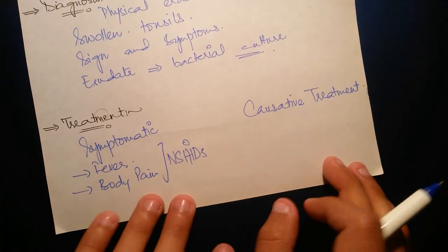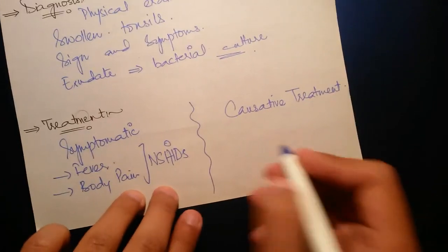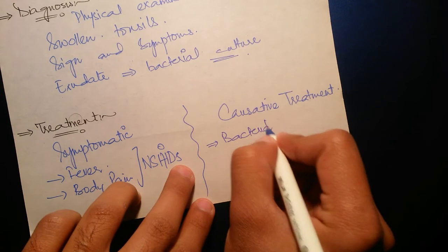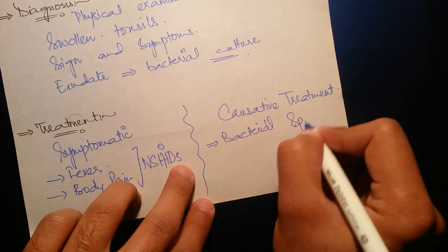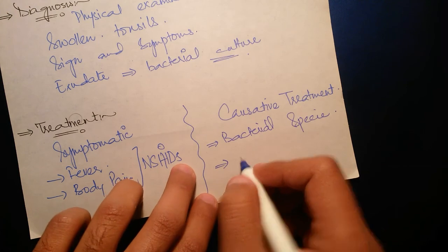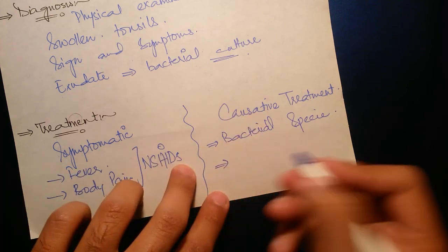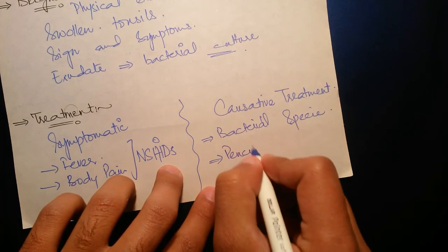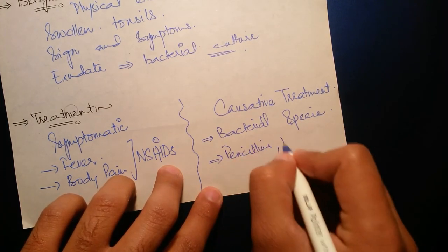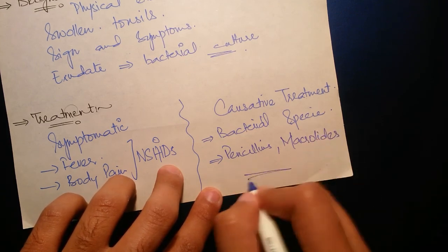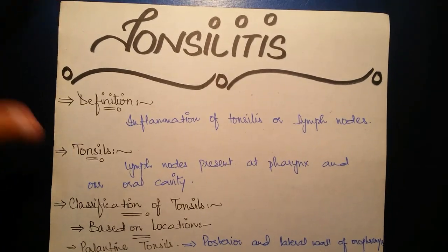For causative treatment, we have to check the bacterial species and then the most probable medicine or antibiotic is given. Mostly penicillin and macrolides are used. That was all for tonsillitis, thank you so much for watching.